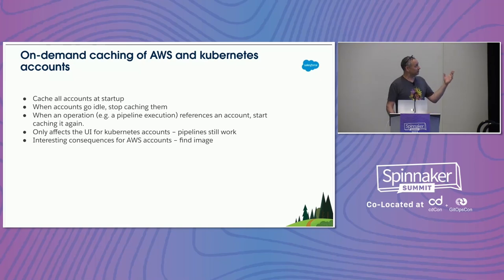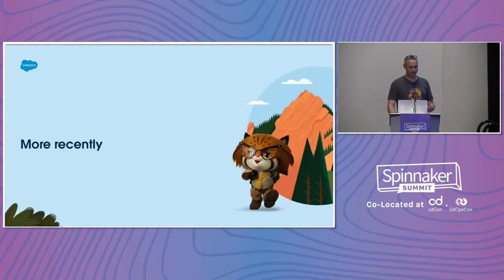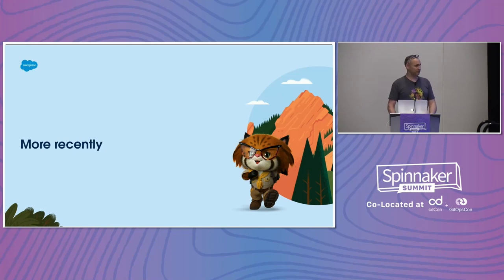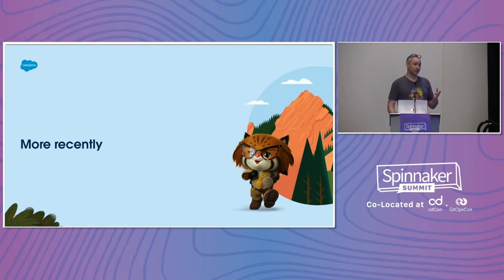Now I'm going to get to the good part. Every day since 2018 it feels like more users are coming on, more teams, more pipelines, more everything — we've had to work hard to keep up. I want to talk about the teams at Salesforce that do this. There's my team, known as the Spinnaker Product Team, and we're nicely siloed — we get to focus on the Spinnaker codebase and don't have direct operational responsibilities.